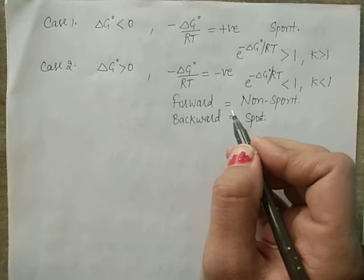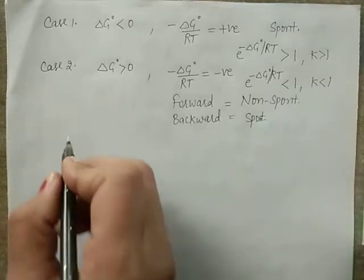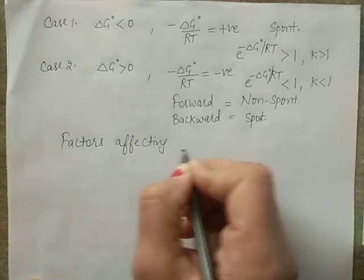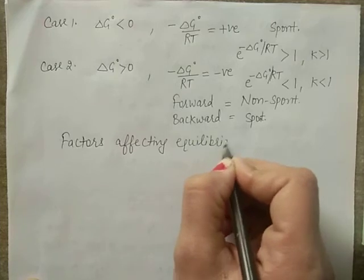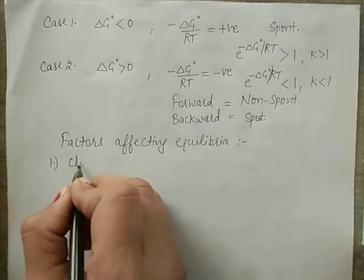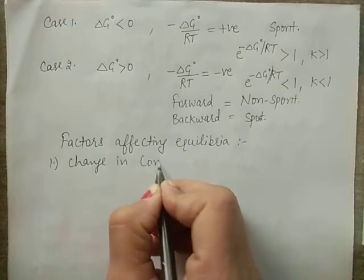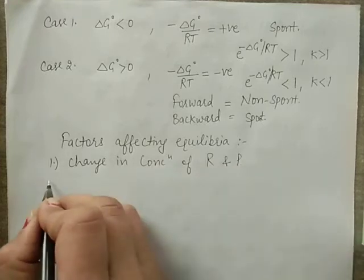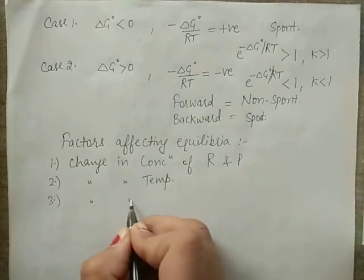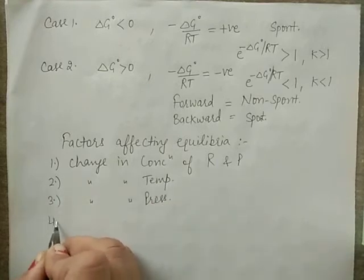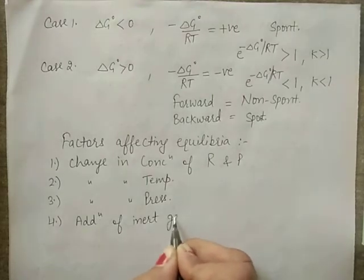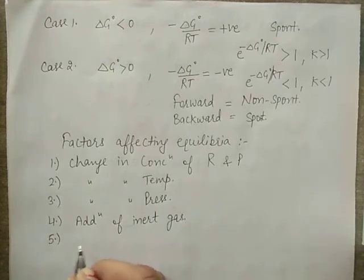The next topic is factors affecting equilibrium. The main factors are: (1) change in concentration of reactants and products, (2) change in temperature, (3) change in pressure, (4) addition of inert gas, and (5) addition of catalyst.